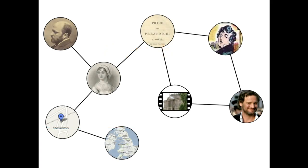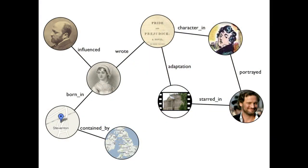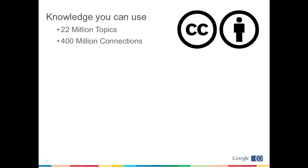You're probably aware that Freebase is a giant graph of entities. Here we're looking at the neighborhood around Jane Austen — she was an author who was born in a town in England and wrote a couple of books, and influenced a few people. What's unique about Freebase is that all of the links between entities are actually labeled so we can tell you what type of relationship they have. Right now there are over 22 million topics in Freebase and over 400 million connections between those entities. Everything in Freebase is available under a Creative Commons attribution license.